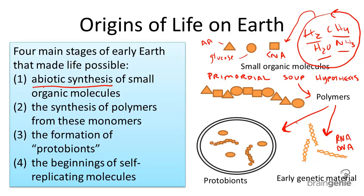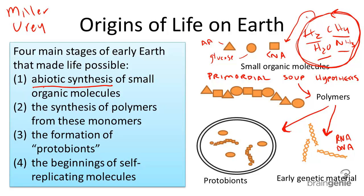Many experiments have been carried out to mimic the early conditions on Earth, to help us determine how amino acids, sugars, and nucleotides came about. Two gentlemen, Miller and Urey, proved that these elements — hydrogen, methane, water, and ammonia — could combine into amino acids, sugars, and nucleotides, given the right conditions.